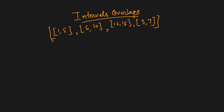First, the brute force which is O(n²): we can have nested loops where we compare each interval with the rest of the intervals in the list. For example, we take this one and compare the start time and end time, and we'll find there is an overlap. So the brute force is to compare each interval with all the other intervals, giving O(n²). Can we do better?